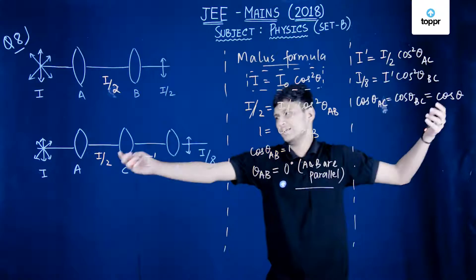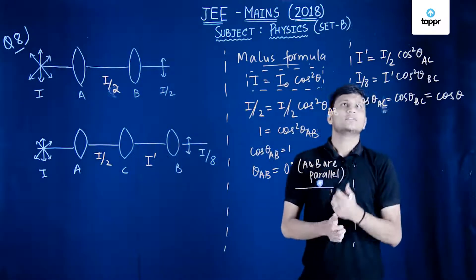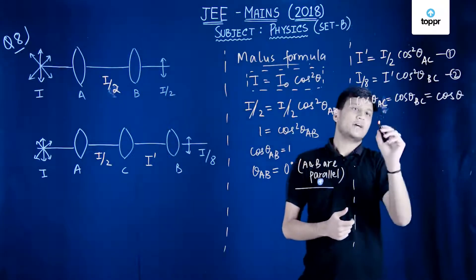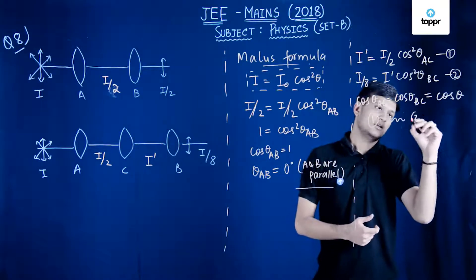And this would be the angle between AC, this would be the angle between B and C as well. What now we have to do is simply use the equations and use equation 1 in 2.